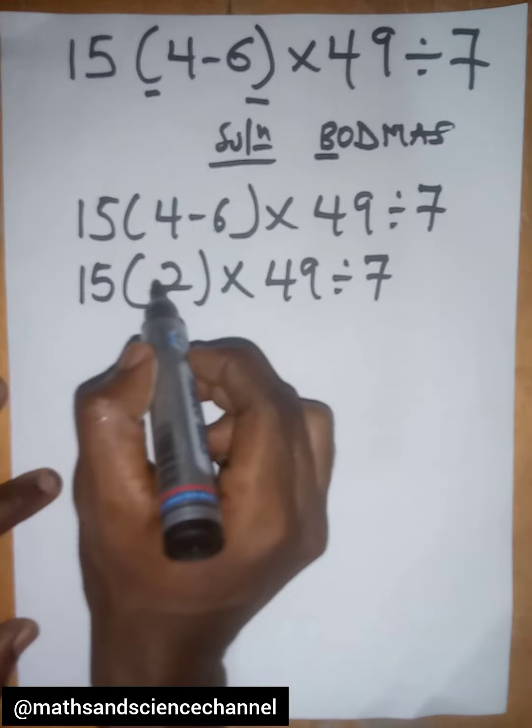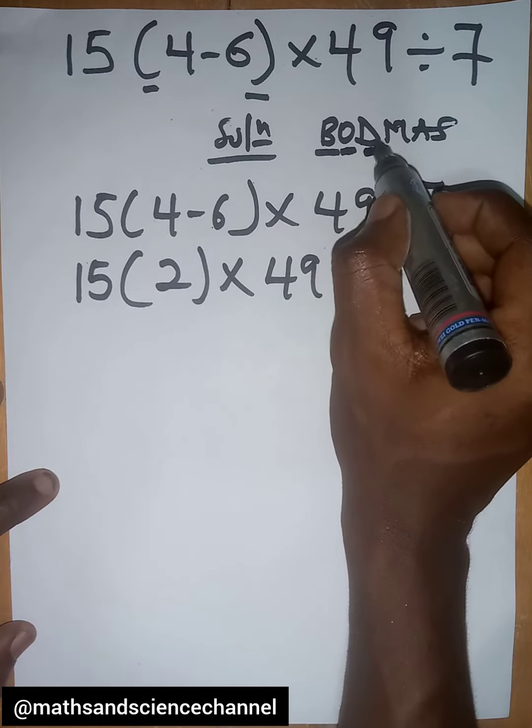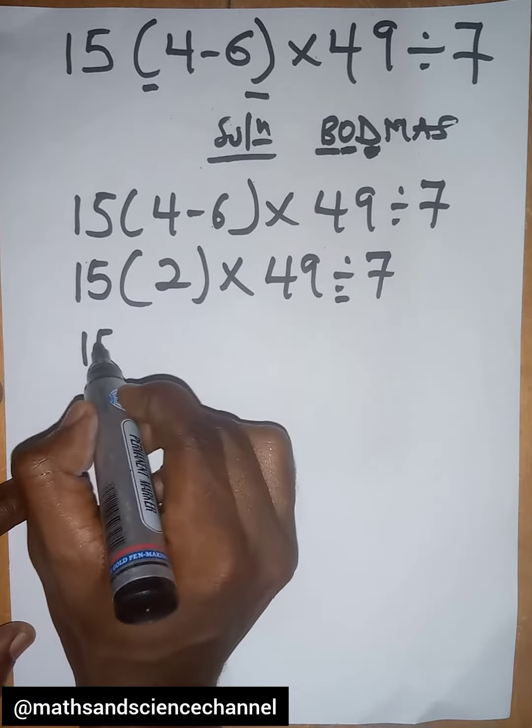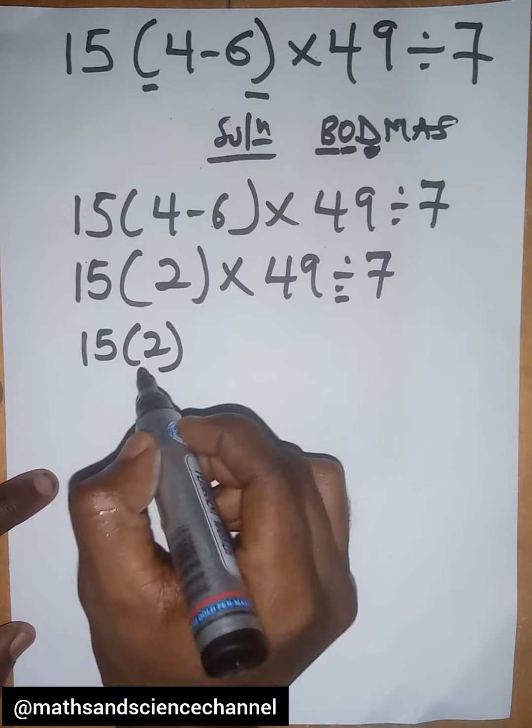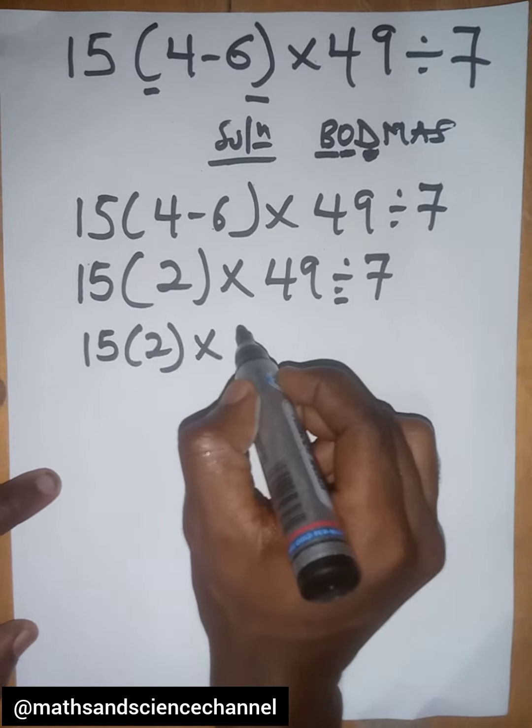Now the next thing is division. We have 49 divided by 7, which is 7. So we have 15(-2)×7.